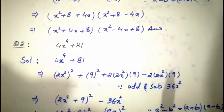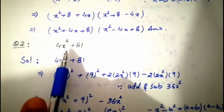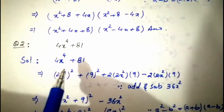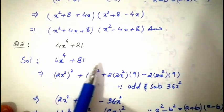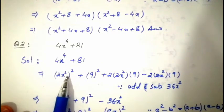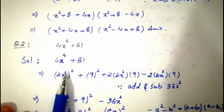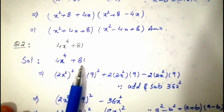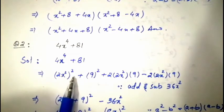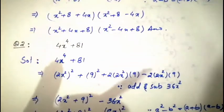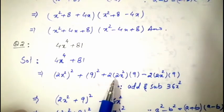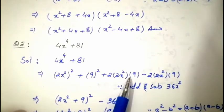Question number two is: 4x⁴ + 81. It is exactly the same type as question one. We break 4x⁴ as (2x²)² — because (2)² = 4 and (x²)² = x⁴. And 81 = 9². So we have a² = (2x²)² and b² = 9².